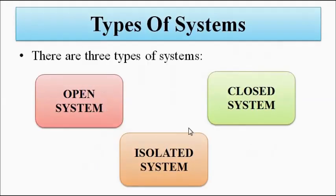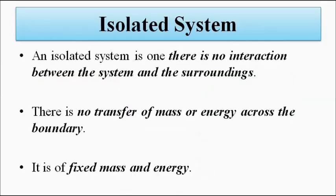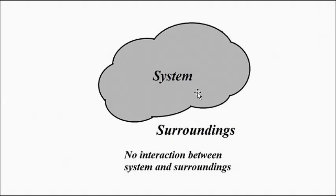The third type is the isolated system. From the name itself we can make out that there is no transfer of mass or energy in and out of the system — no interaction between the system and the surroundings. It is a system of fixed mass and energy with no exchange whatsoever.